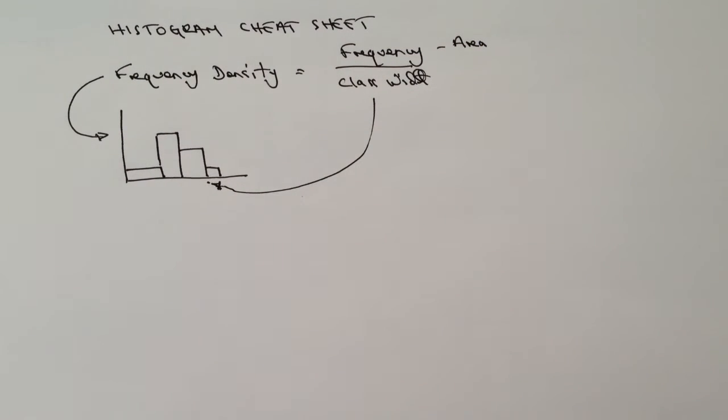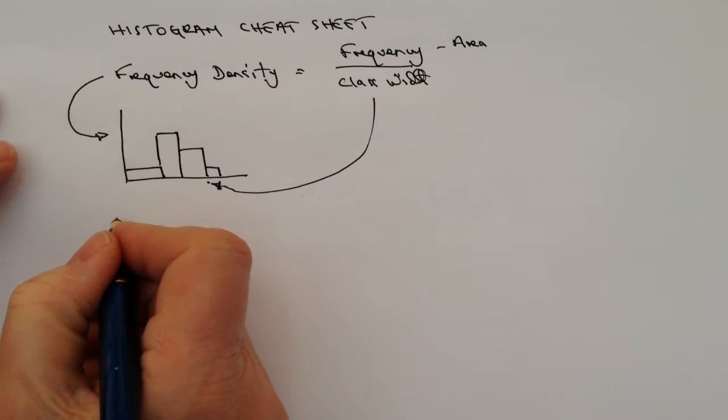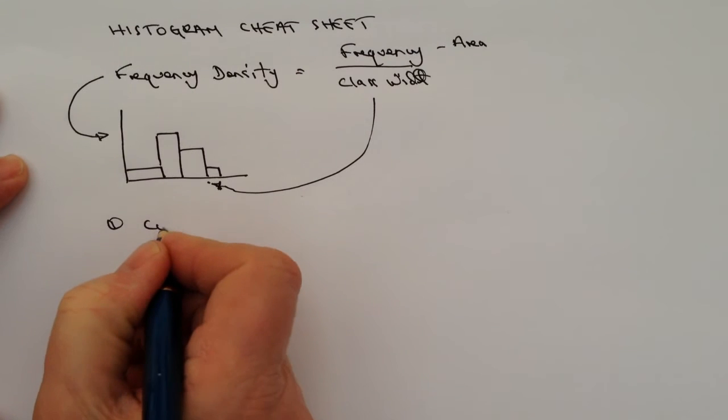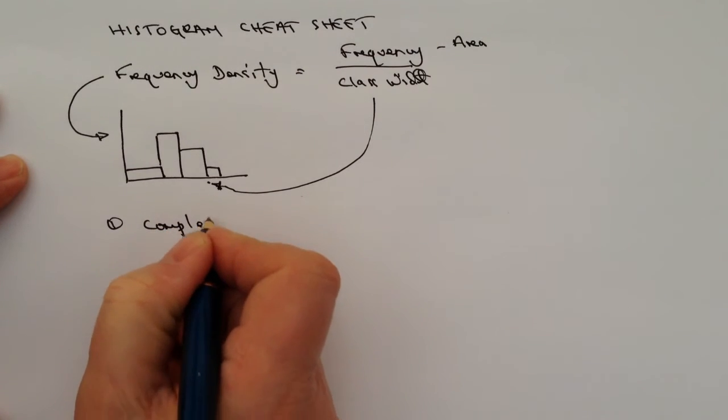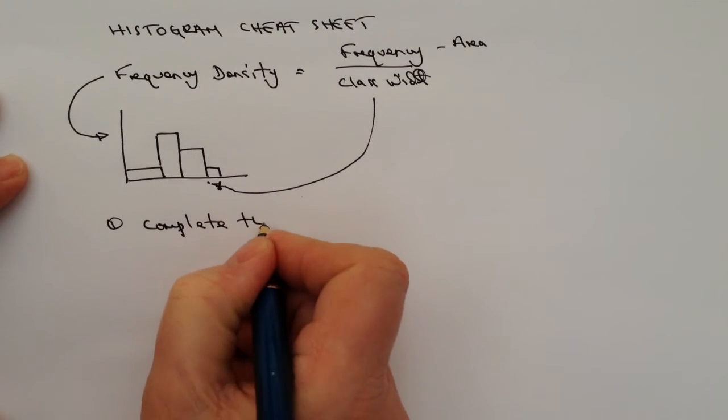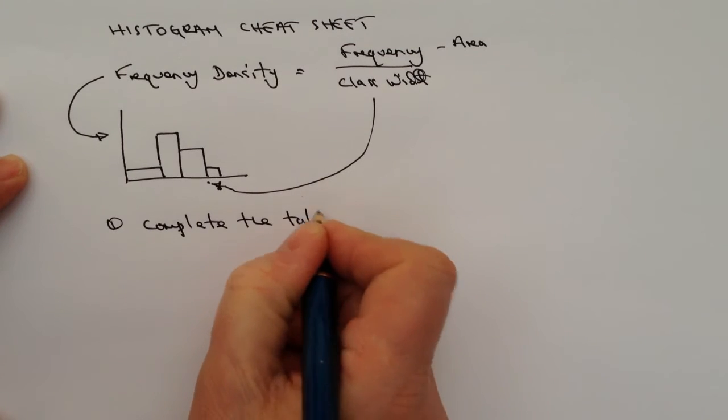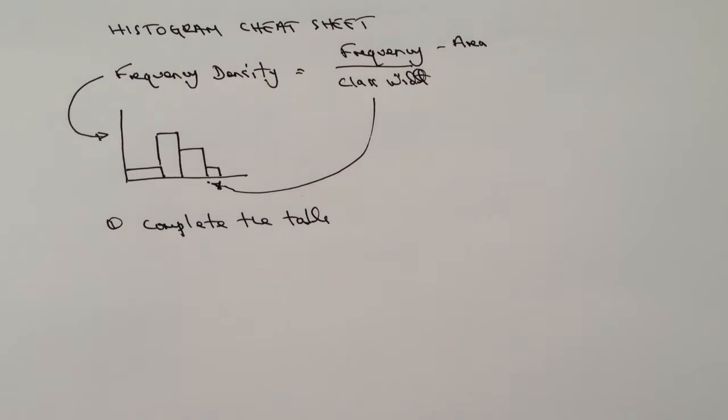There are only two types of questions you'll come across when dealing with histograms. The first type asks you to complete the table. You usually get a partially completed table and it asks you to fill in the missing pieces.